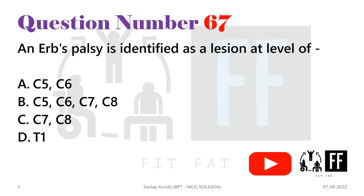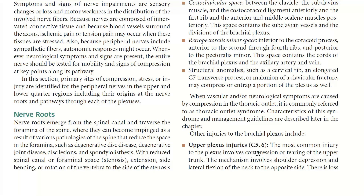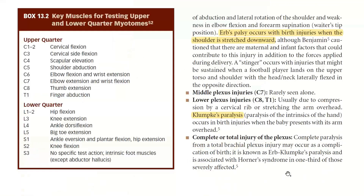Upper plexus injury is the most common injury of the brachial plexus. The mechanism of injury involves shoulder depression and lateral flexion of the neck to the opposite side. Erb's palsy mainly occurs with birth injuries when the shoulder is stretched downwards, so it is an upper plexus injury.